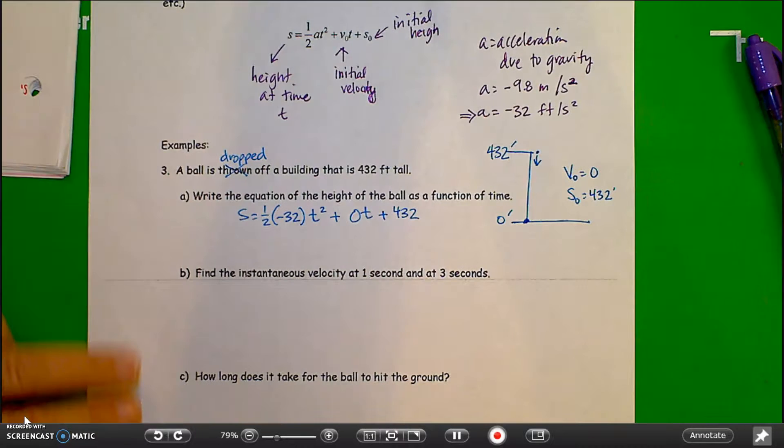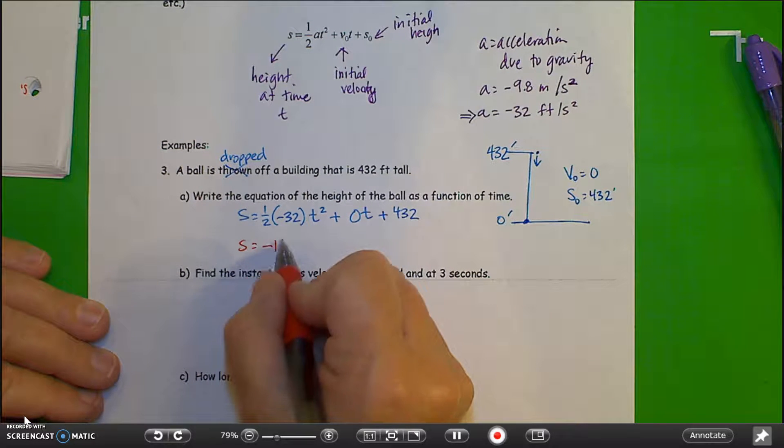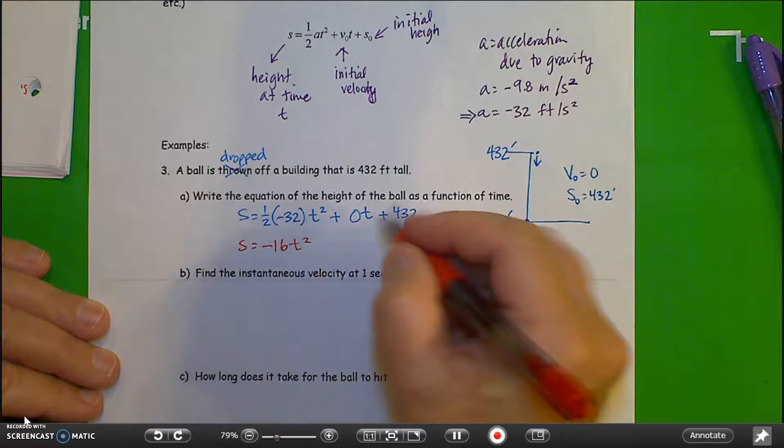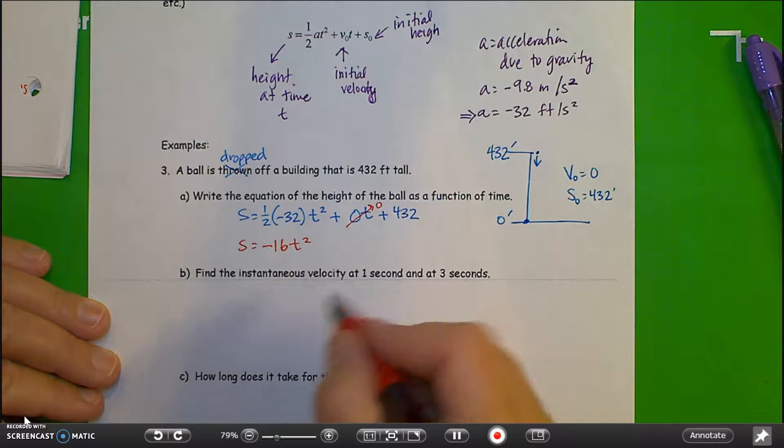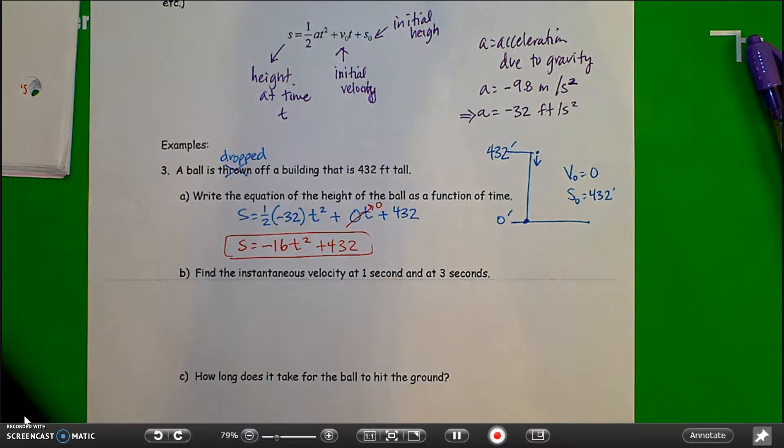Okay, so we'll clean this up. One-half times negative 32, negative 16t squared. Zero t just goes to zero. Plus 432. There is my position formula for this problem.